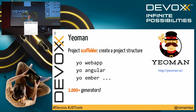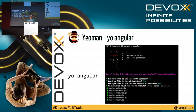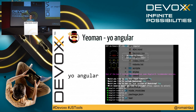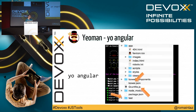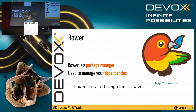Another tool you may have heard of is Yeoman. Yeoman will scaffold the project, which means that with a single command you get a full project structure. For example, if you want to start Angular development, you run Yeoman Angular and the tool will ask you questions — do you want to use Compass, Sass, Bootstrap, which Angular modules — and at the end you get a full structure with best practices like tests, a Grunt file. Speaking of Bower, Bower is also a package manager, essentially used to manage your dependencies.